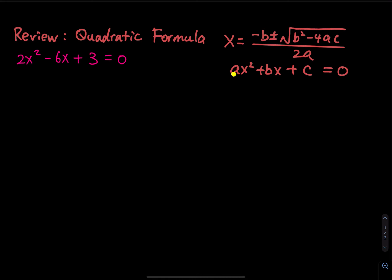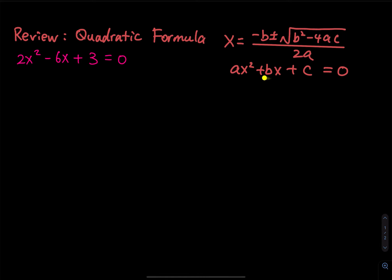a is called the leading coefficient because x has the highest power. That is the coefficient for the variable with the highest power — square. Since the highest power is square, we call this a quadratic equation. If the highest power is 1, we call it a linear equation. b is a coefficient and c is a constant.